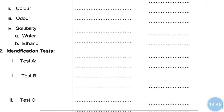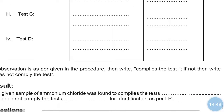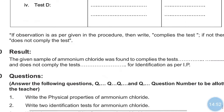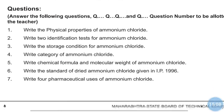These are the observations and inferences for the organoleptic test of ammonium chloride. If tests A and B comply, write 'complies the test.' If, for example, tests D and E are not complying, then write that D and E do not comply with the test.